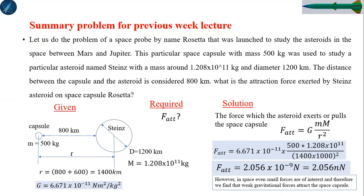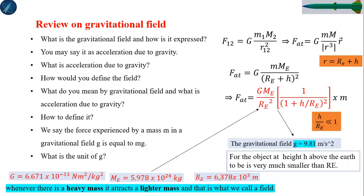We summarized with a simple example involving a meteoroid and a small rocket or space probe sent to check the situation of that meteoroid. This is the expression showing how the gravitational field varies with altitude h.